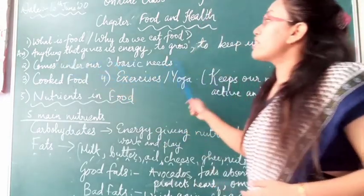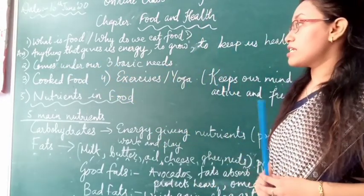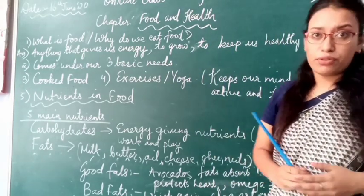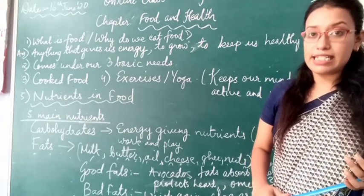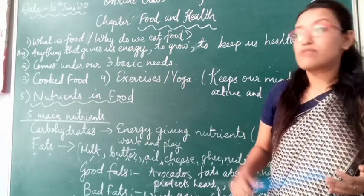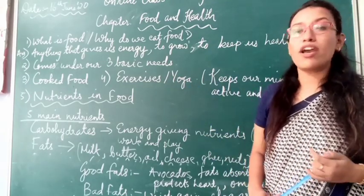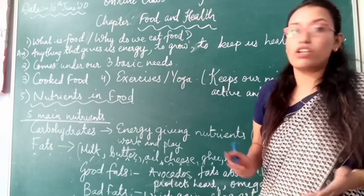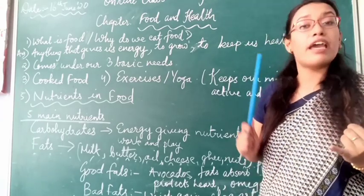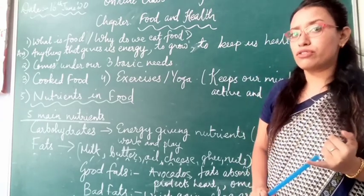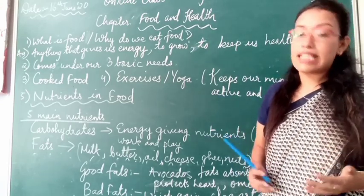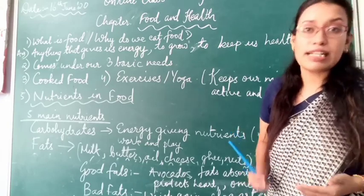Food comes under our three basic needs. While studying food, there are different types of food: food that we cook and eat at home, food that we get easily, and food that we buy from the market. There are raw foods, cooked foods, and uncooked foods like fruits and vegetables. Some fruits and vegetables we can eat without cooking.